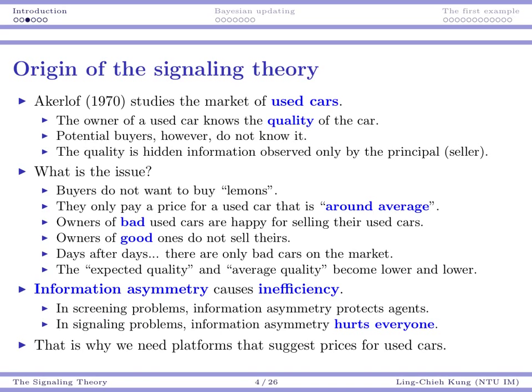In a screening game, information asymmetry protects the agent but hurts the principal. In a signaling game, the problem is even worse because information asymmetry hurts both the buyer and the seller. Eventually, how may we solve this problem? Thanks to information technology and the internet, we now have platforms that suggest reasonable prices for used cars, and car workshops that can investigate those used cars. That helps buyers reveal the hidden quality, and helps eliminate or at least alleviate information asymmetry to enhance efficiency.